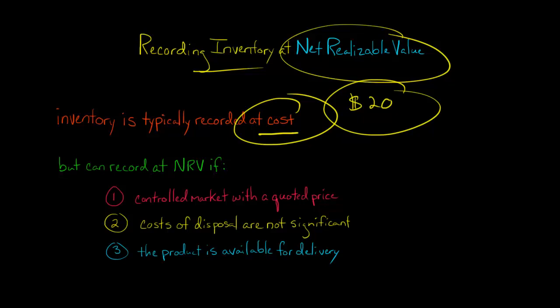But in certain industries with certain types of products, they can actually record the inventory at net realizable value. Here are the conditions per US GAAP: it has to be a controlled market with a quoted price, so some kind of commodity where you can see the price is quoted on a market. The cost of disposal has to be not very large, and the product is immediately available for delivery.